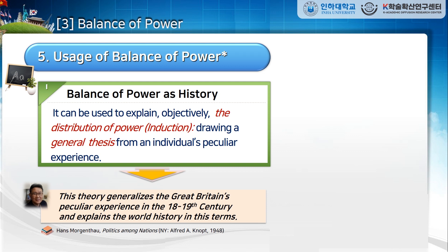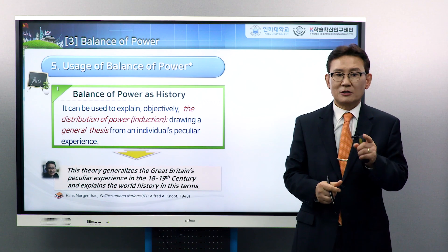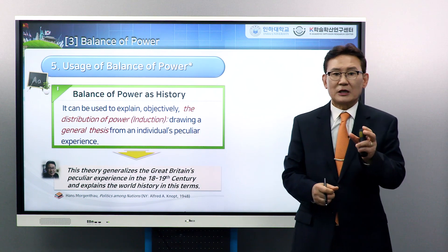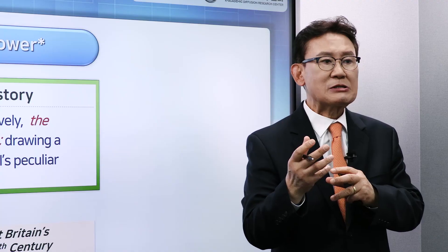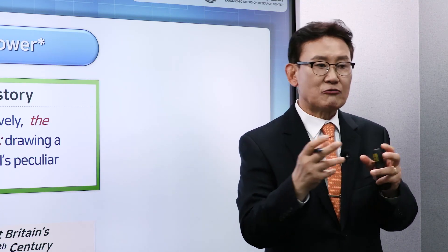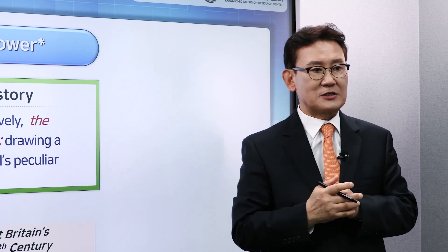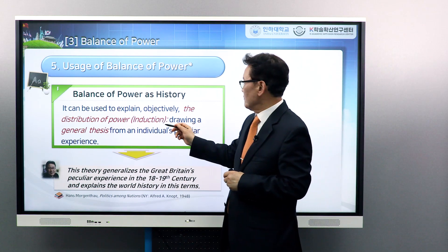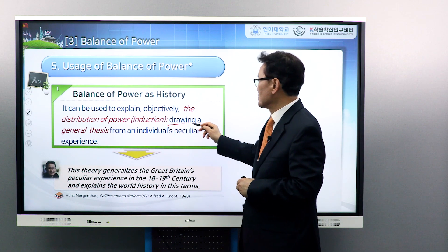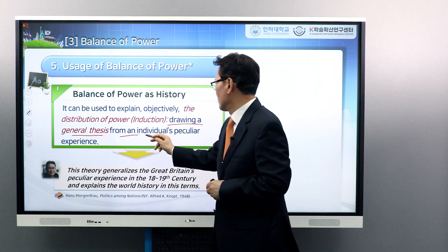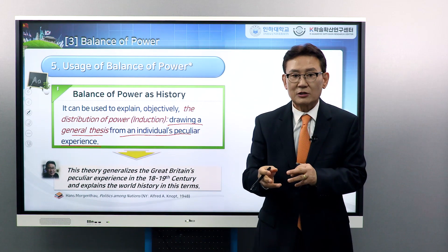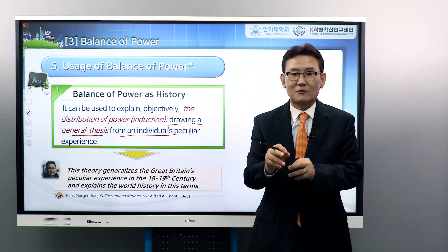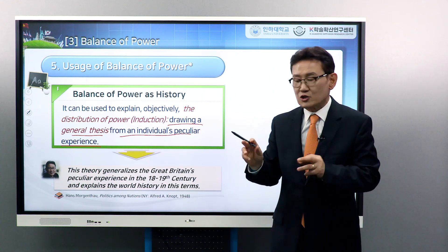Balance of power is used to explain with objectivity the distribution of power in history. In other words, this is an inductive way. Induction means that we introduce or explain history as a result of historical events. The inductive way of explaining history draws a general thesis from an individual's peculiar experience. The balance of power theory extracted a general thesis from the UK's peculiar historical experience.